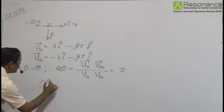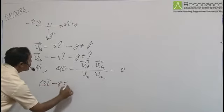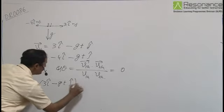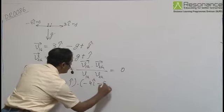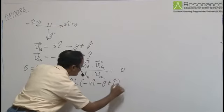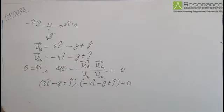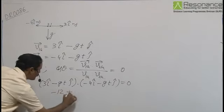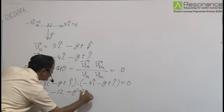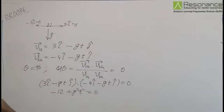We have 3 i cap minus gt j cap dot minus 4 i cap minus gt j cap has to be equal to 0. Or, minus 12 plus g square t square has to equal 0.